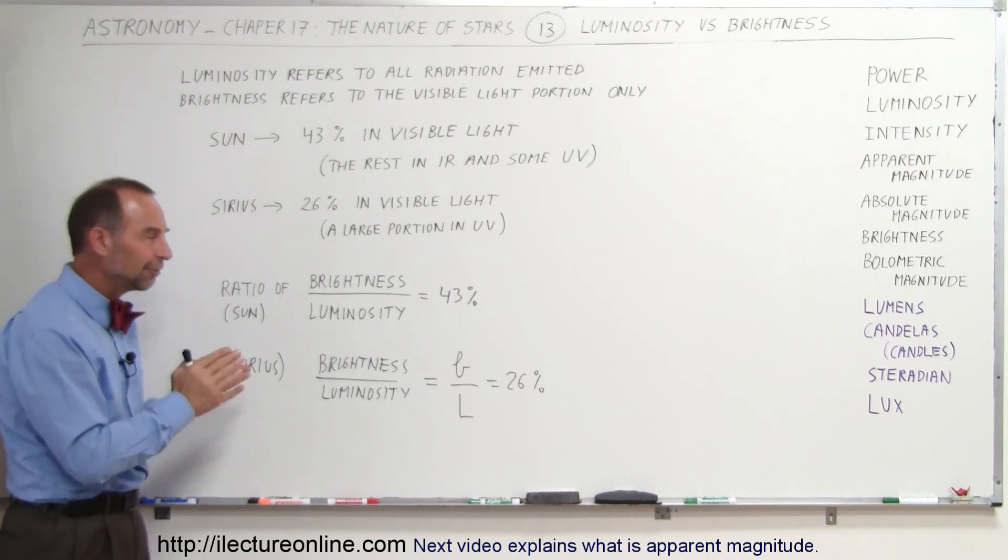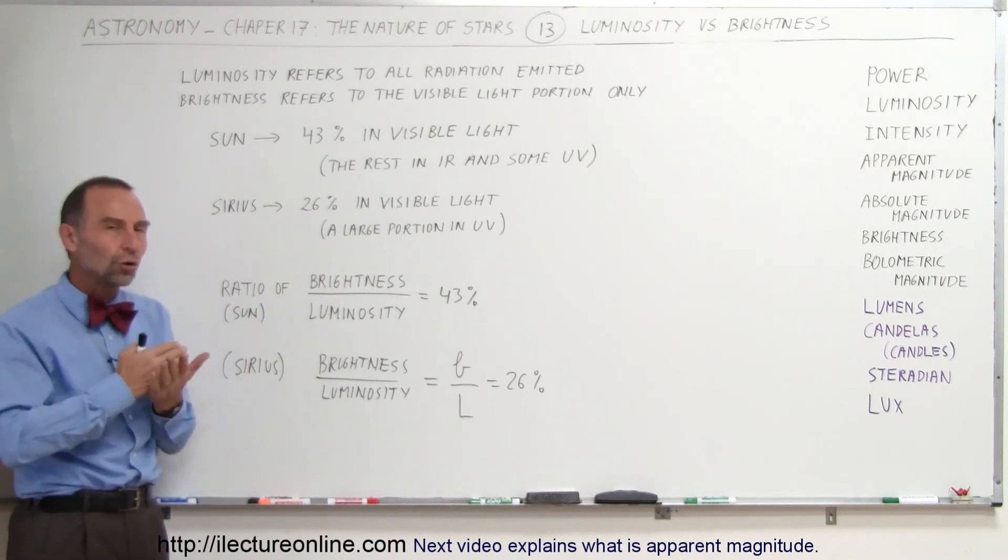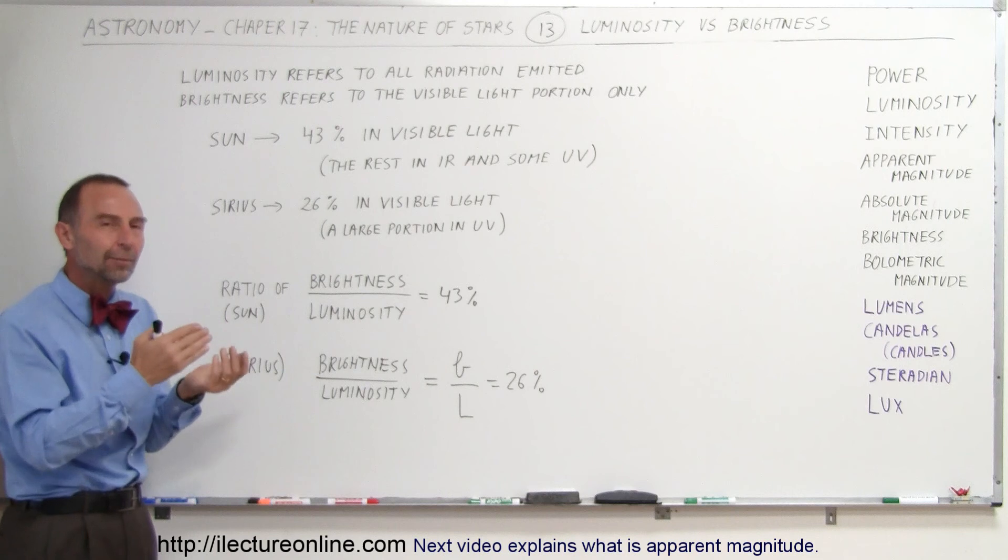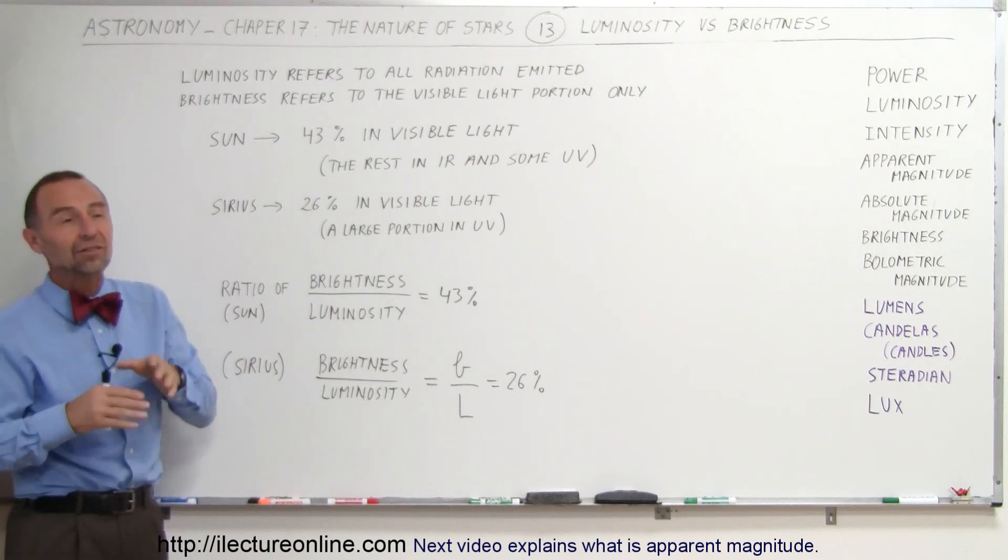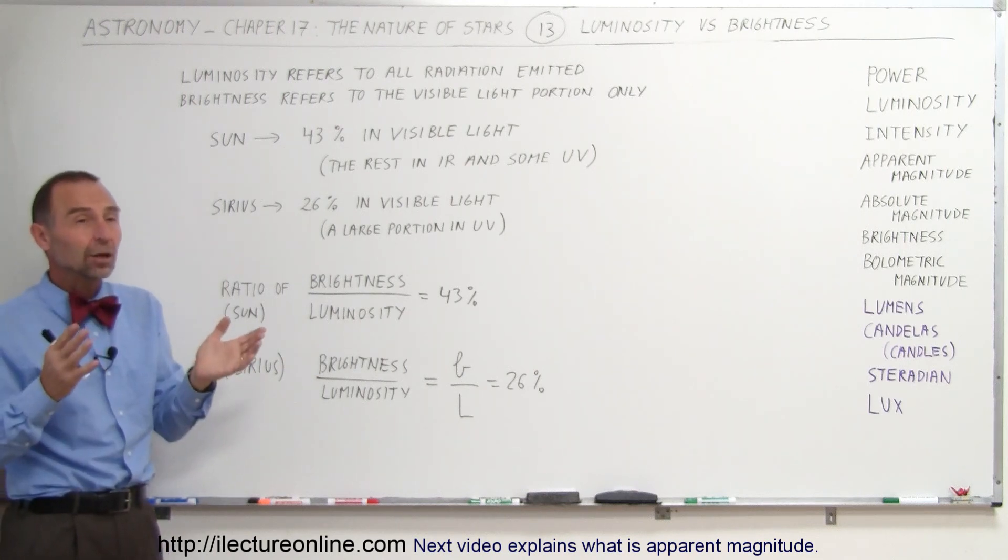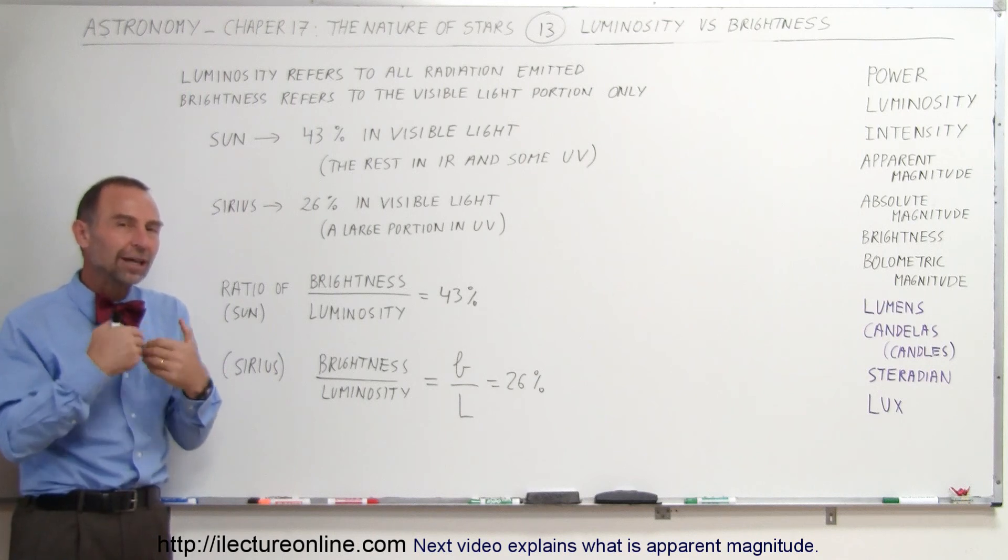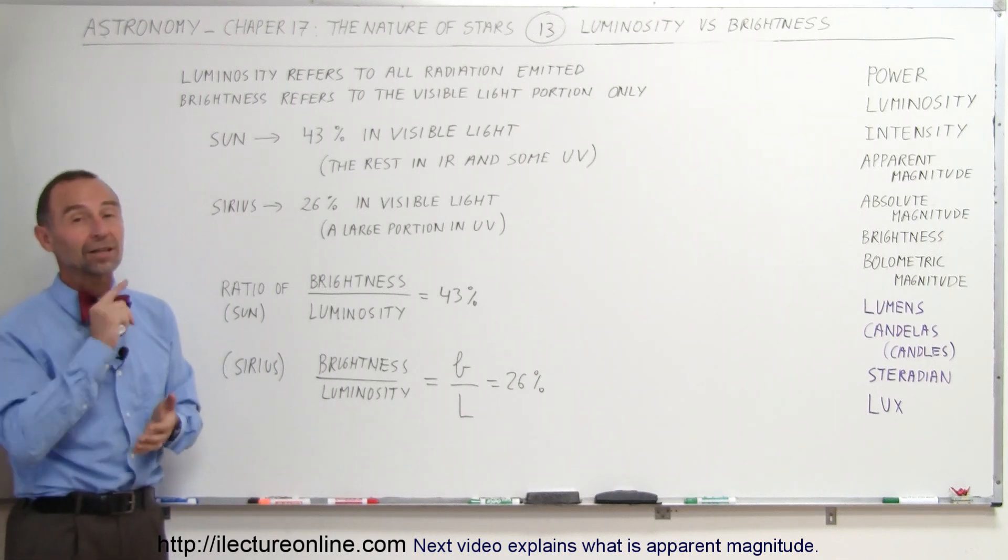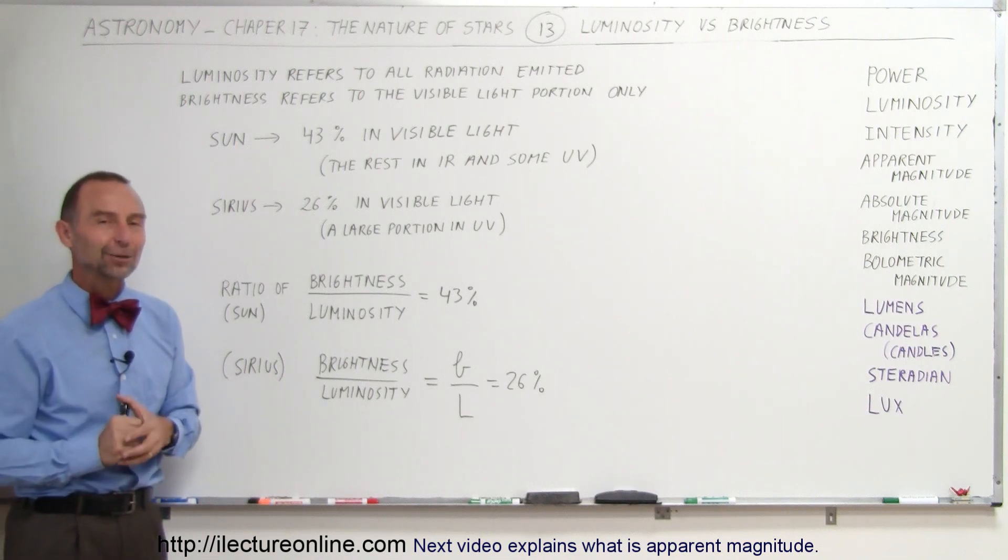And we're going to try and clarify that in the next video to show you what we actually mean when we say apparent magnitude and absolute magnitude. Is it in terms of the total luminosity, or is it in terms of the brightness of the star in the visible light portion only? To clarify that, let's come back to the next video and take a look.